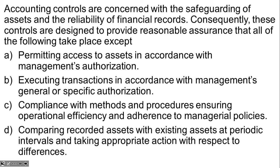We've got two key words to recognize in order to get this question correct. The first is that we're talking specifically about accounting controls — there are all kinds of controls in a company, but we're interested in accounting controls. The second is the word 'except,' meaning three of the choices are things accounting controls are used for, and one is not.